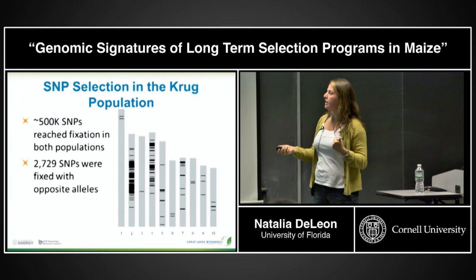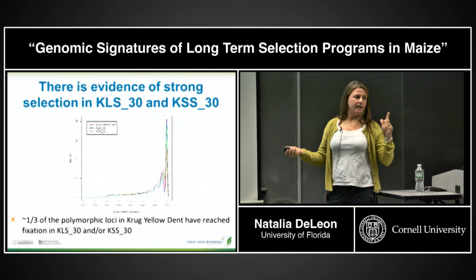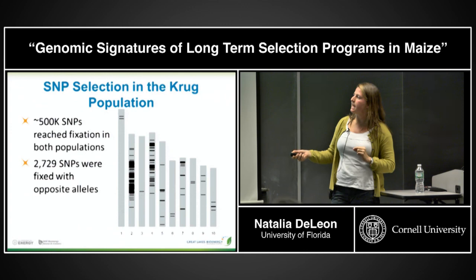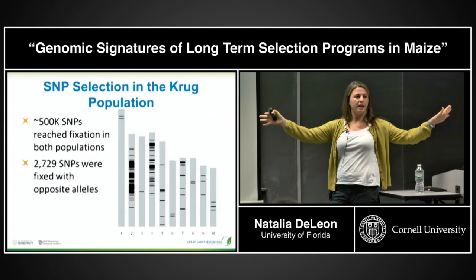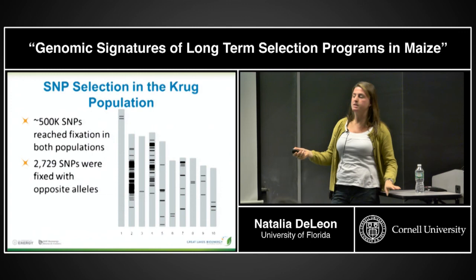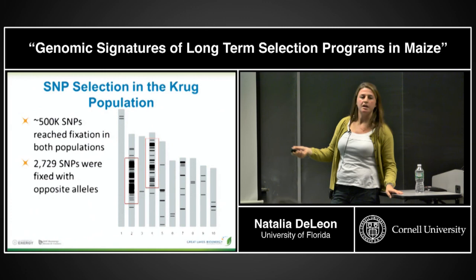Most intriguingly, about 2,700 SNPs were fixed in Cycle 30 small and large in opposite directions — markers that were polymorphic in Cycle 0 and migrated in opposite directions. The majority of these are concentrated in two particular regions of chromosome 2 and chromosome 4, suggesting something quite interesting is happening in those genomic regions.